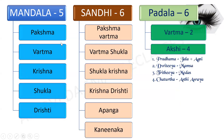The 5 Mandalas are: Pakshma Mandala, Vartma, Krishna, Shukla, and Drishti. The 6 Sandhis are: Pakshma-Vartma, Vartma-Shukla, Shukla-Krishna, Krishna-Drishti, Abhanga, and Kaninaka.